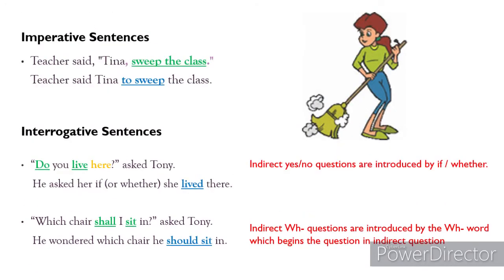Now let's turn imperative sentences into reported speech. The teacher said, 'Tina, sweep the class.' The actual words spoken by the teacher are given within inverted commas. That can be changed into reported speech as follows: The teacher told Tina to sweep the class.